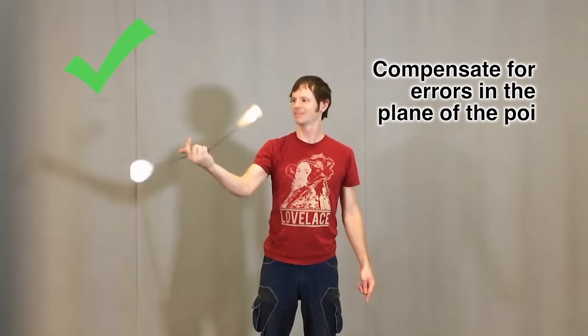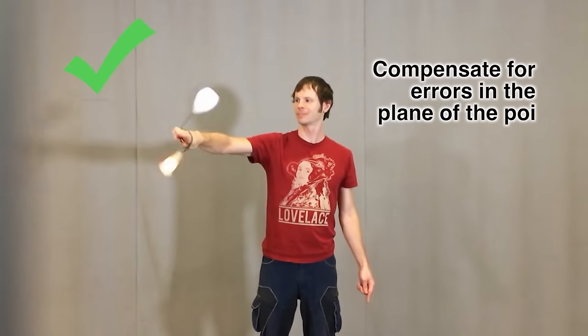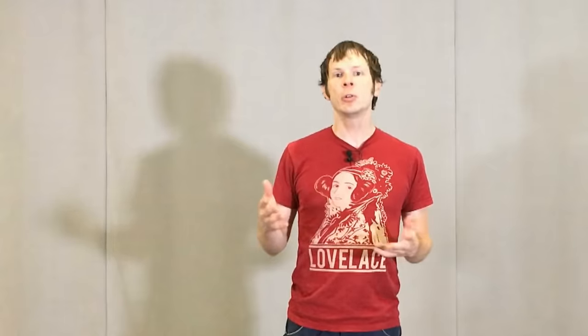If the poi seems to be running away to the right, point your hand to the left. I know it seems counterintuitive, but it will work. After a little while, you'll find that your plane's evened out and compensating in this fashion will become less and less necessary.